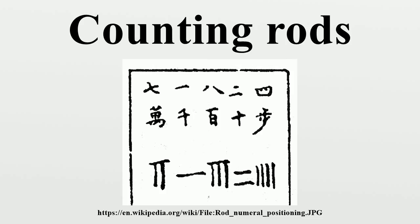Before the introduction of written zero, there was no way to distinguish 1007 and 107 in written forms except by inserting a bigger space between 1 and 7, and so rod numerals were used only for doing calculations with counting rods. Once written zero came into play, rod numerals became independent, and their use indeed outlived the counting rods. After replacement by the abacus, one variation of horizontal rod numerals — the Suzhou numerals — is still in use for bookkeeping and in herbal medicine prescriptions in China and some parts of the world.